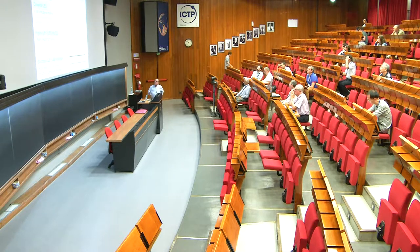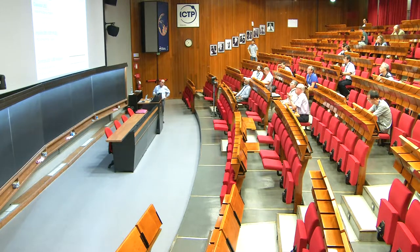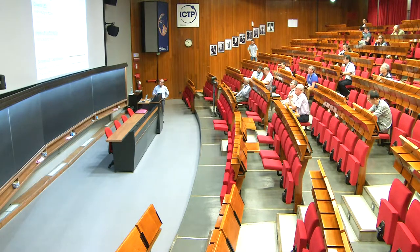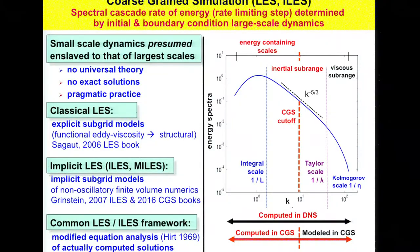The big assumption in LES is that small-scale dynamics is enslaved to that of the large scales. There are classical methods using sub-scale models — functional forms and structural forms, with Sagaut's book probably the best textbook on that.